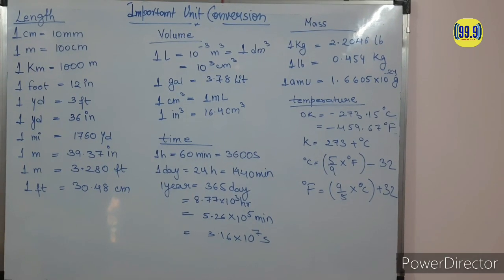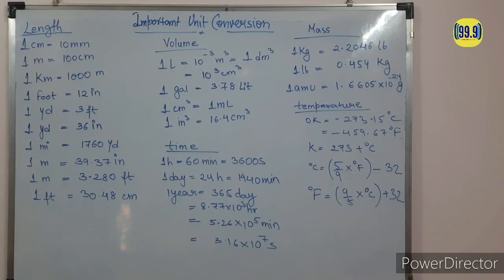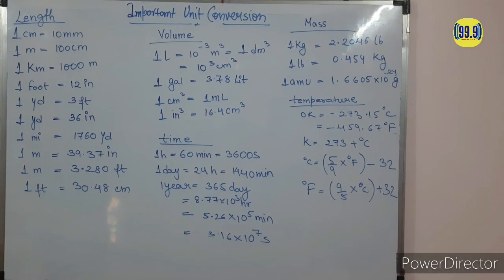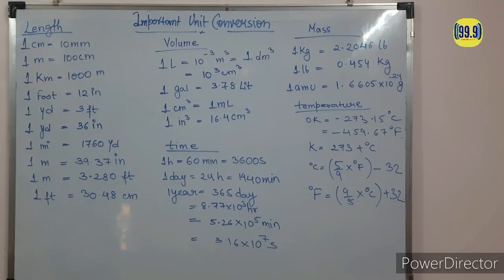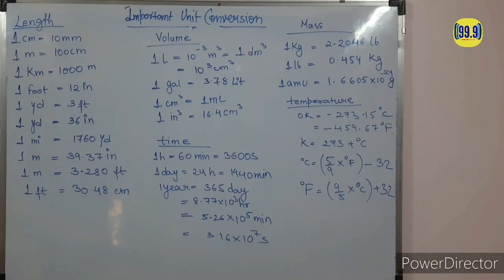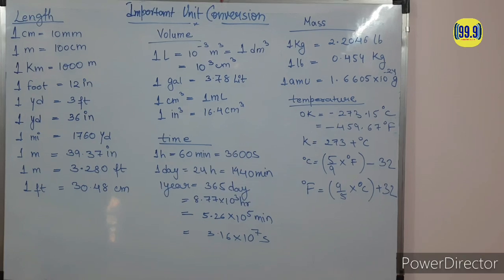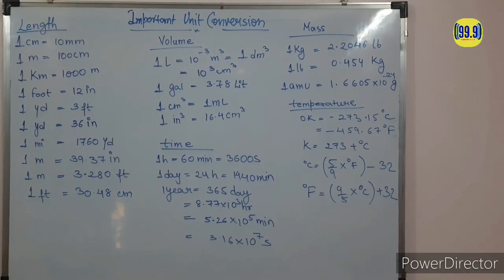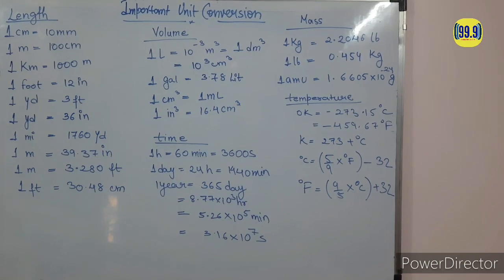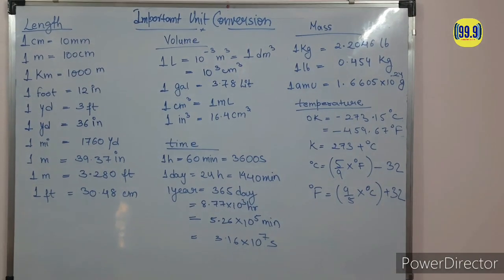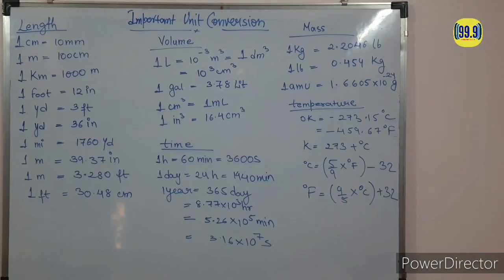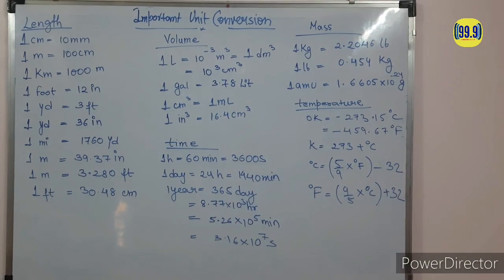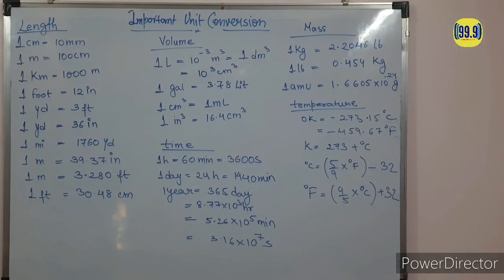Now come to the volume unit and unit conversion. 1 liter is equal to 10 to the power minus 3 meter cube, and it is equal to 1 decimeter cube, and also equal to 10 to the power 3 centimeter cube. 1 gallon is equal to 3.78 liters, and 1 centimeter cube is equal to 1 milliliter. 1 inch cube is equal to 16.4 centimeter cube. In GATE, 1 liter is equal to 1 kg was asked, so remember these conversions.